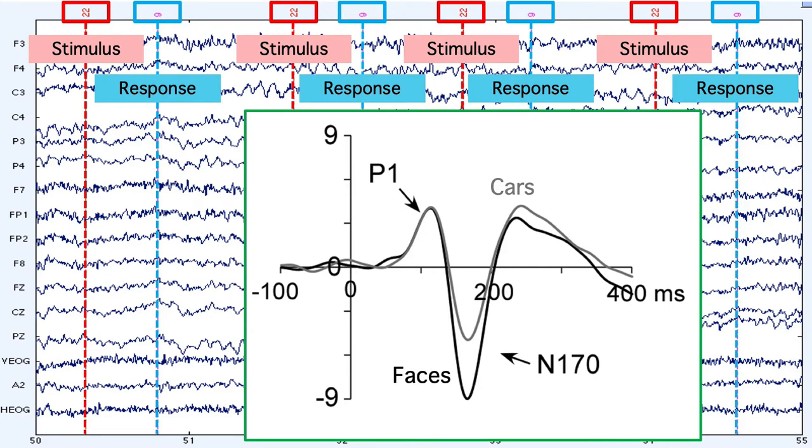Before we make our averages, we have to pull out the single trial EEG epochs for each stimulus. For reasons that will become clear soon, these epochs should include a pre-stimulus baseline interval.